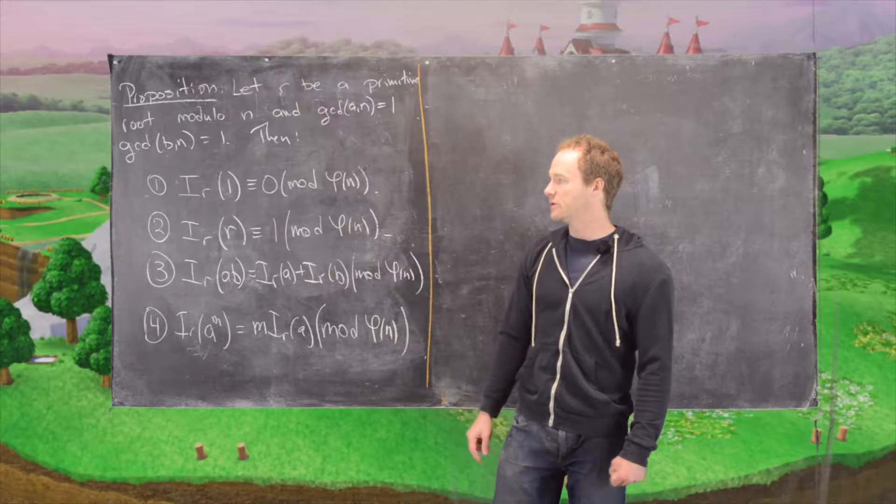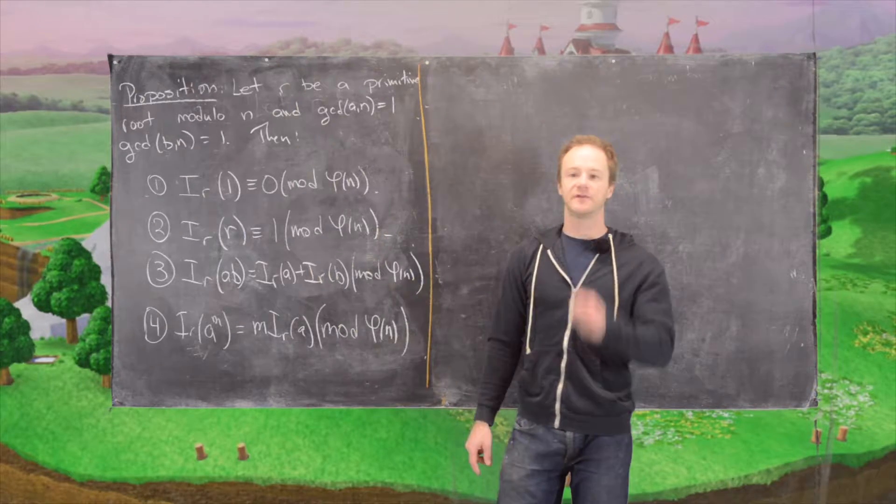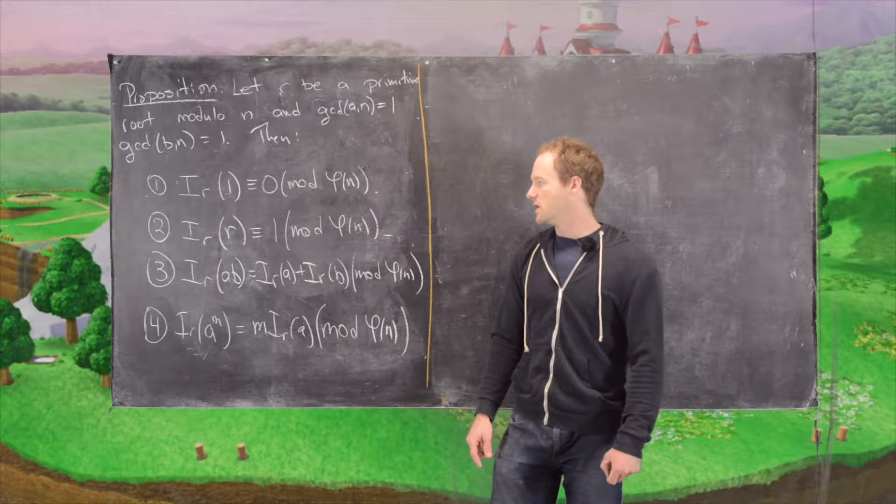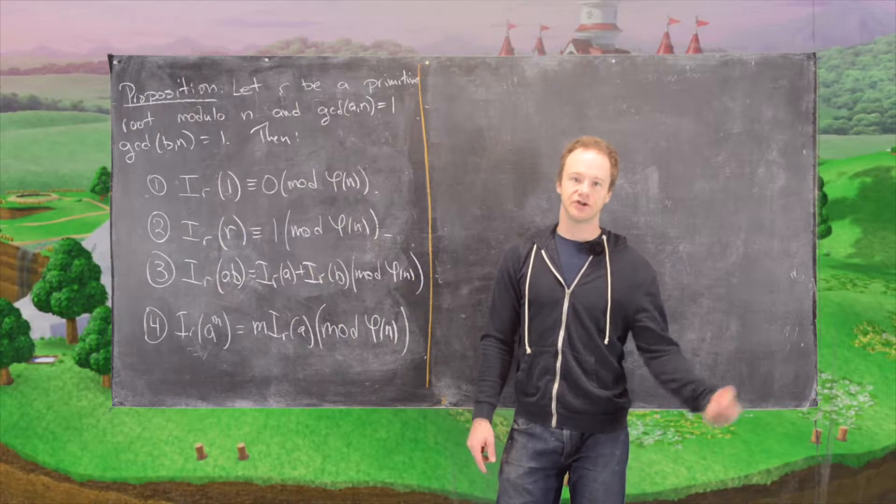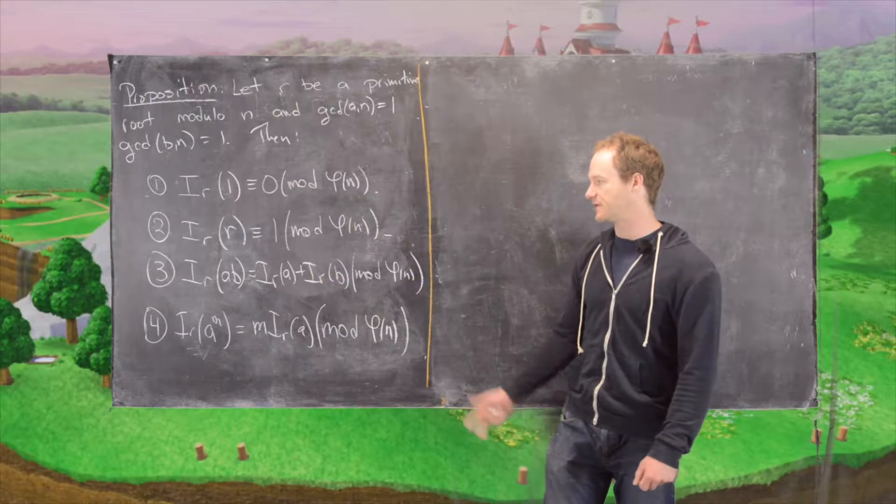And then number two, the index of r with respect to r is 1 mod phi of n. That's pretty obvious just by the definition. You can write r as r to the 1, and 1 is obviously the smallest positive integer.